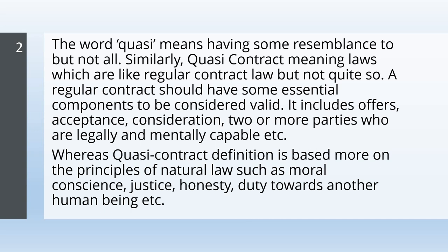A regular contract should have essential components to be considered valid — offer, acceptance, consideration, two or more parties who are legally and mentally capable, etc. Whereas quasi-contract definition is based more on the principles of natural law such as moral conscience, justice, honesty, and duty towards another human being. So quasi-contract resembles a contract but is not exactly one, yet certain provisions make it enforceable as a contract.